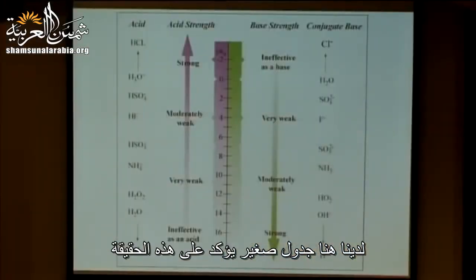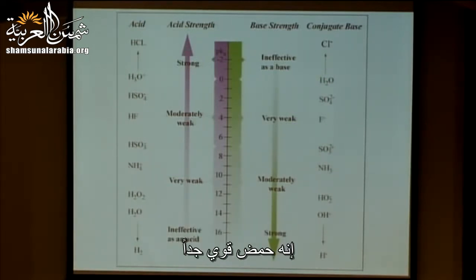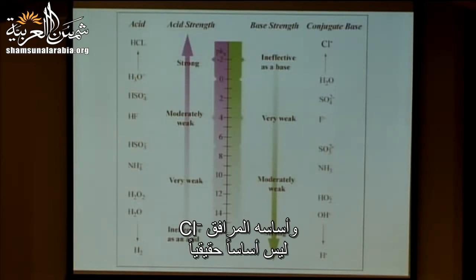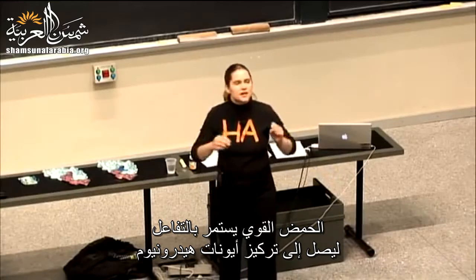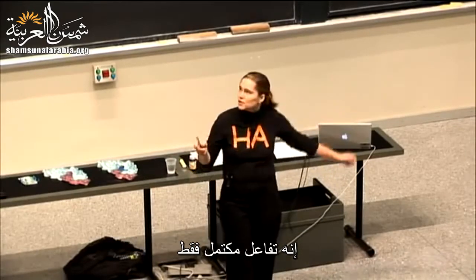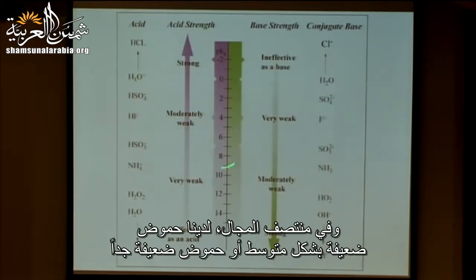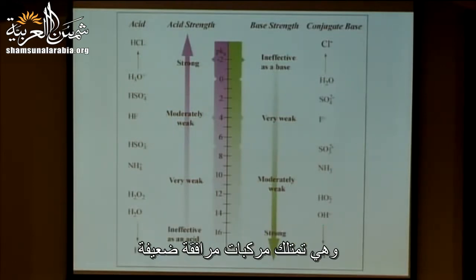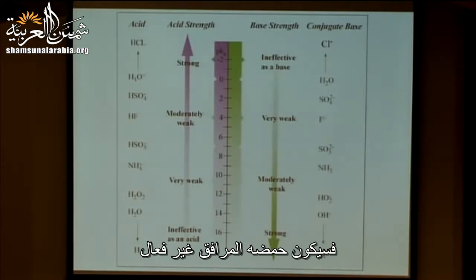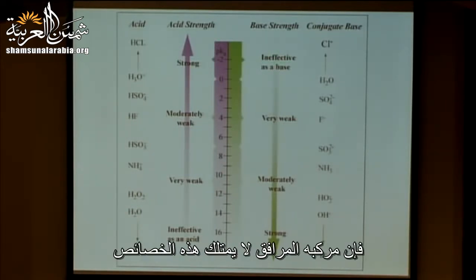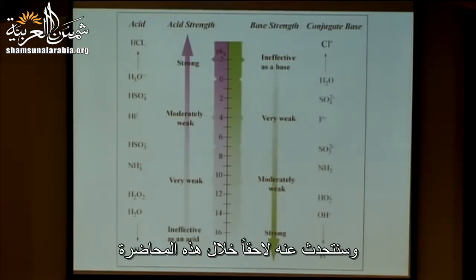Here's a table that emphasizes that fact. With a strong acid like HCl, its conjugate base Cl⁻ is not really a base at all — it's completely ineffectual. A strong acid really drives you all the way to hydronium ion concentration and doesn't go back. In the middle range, things that are moderately weak or very weak acids also have their conjugates in the weak range. But something with a very strong base has a conjugate that is also ineffective as an acid. When you have weak-weak, you can start talking about buffers.